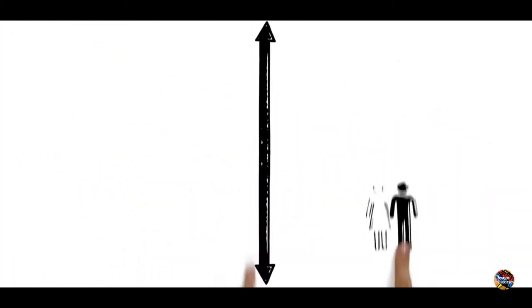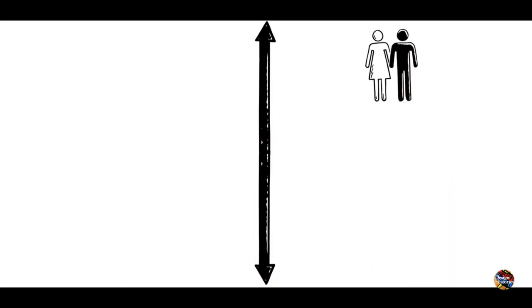The vertical axis of the spectrum deals with the social dimension. As you move towards the bottom, the rights and freedoms of the individual become more and more important.